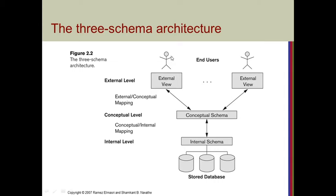Using the cursor, I am trying to explain the diagram. These are the users who use the DBMS — these are called end users. This total viewing group or end users can be categorized into three levels: the external level, also called external schema; the middle one where the logic of the program is written, called conceptual schema; and internal schema, just before the hard disk or storage database. You can see the arrow marks connecting the three schemas — external to conceptual, conceptual to internal, and internal to the stored databases.